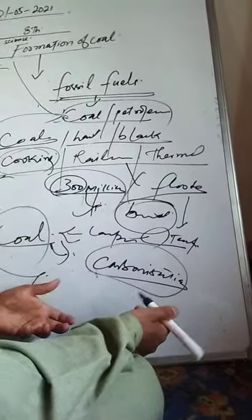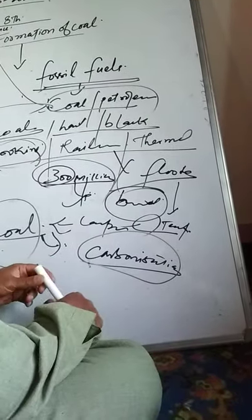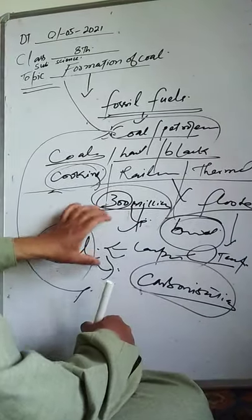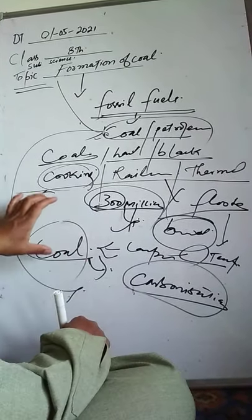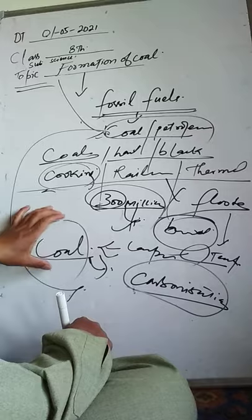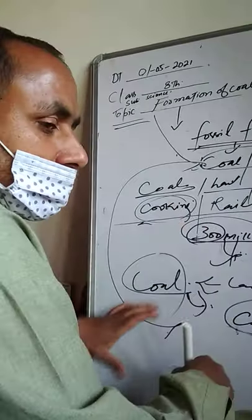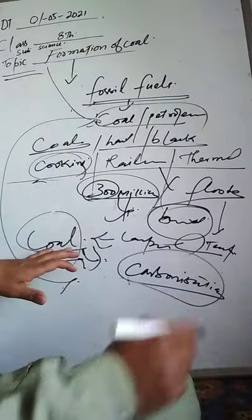Coal is formed from the remains of dead plants and animals. The remains of dead plants buried under the earth form coal over time.